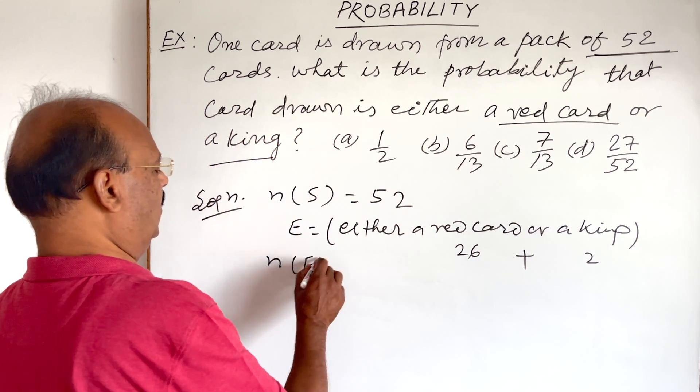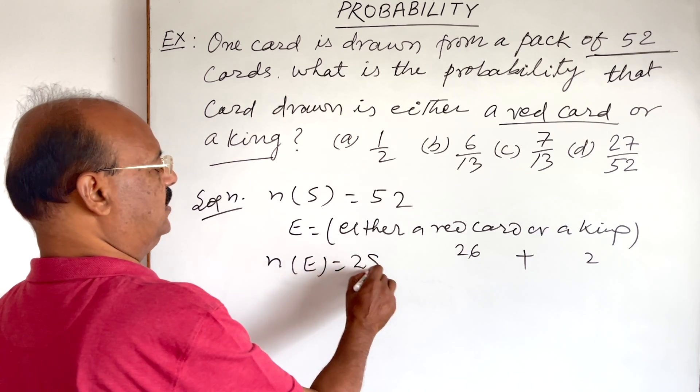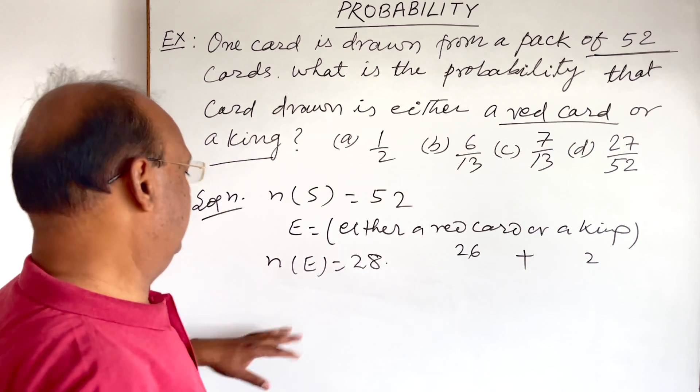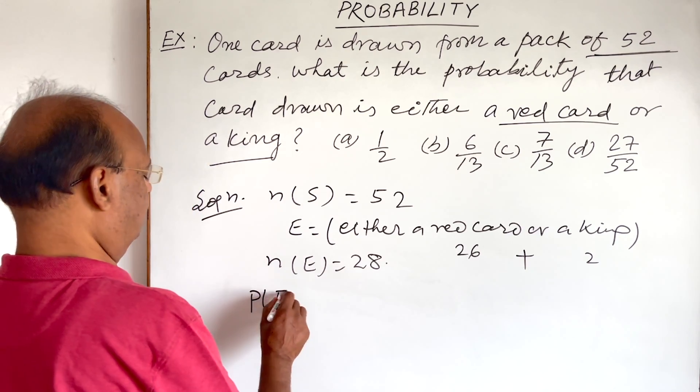So now we have to find out the probability of this event. Probability of E - we know the formula.